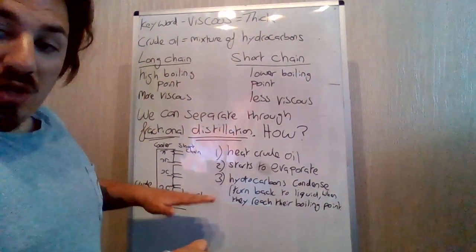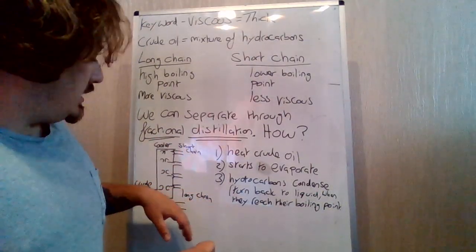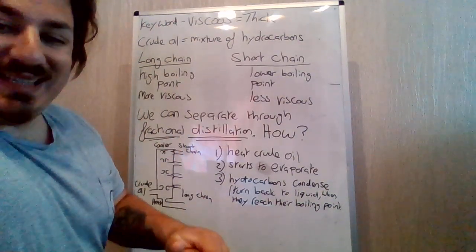Long chains at the bottom, they've got the highest, longest chains, the most amount of energy needed to go into it. And the short chains at the top, which is much cooler and less energy needed.